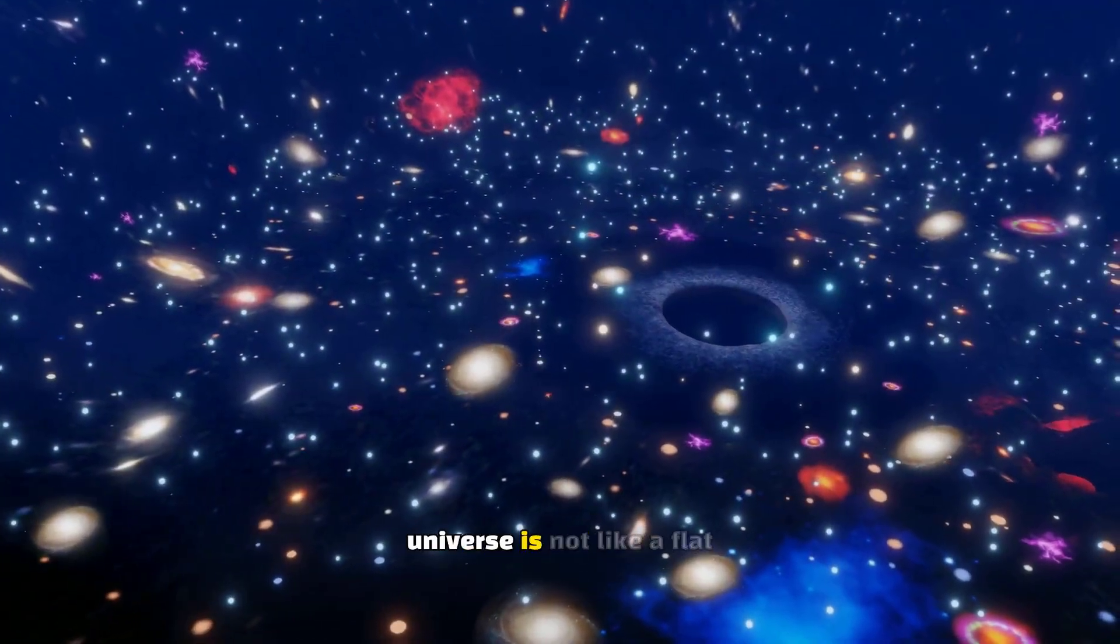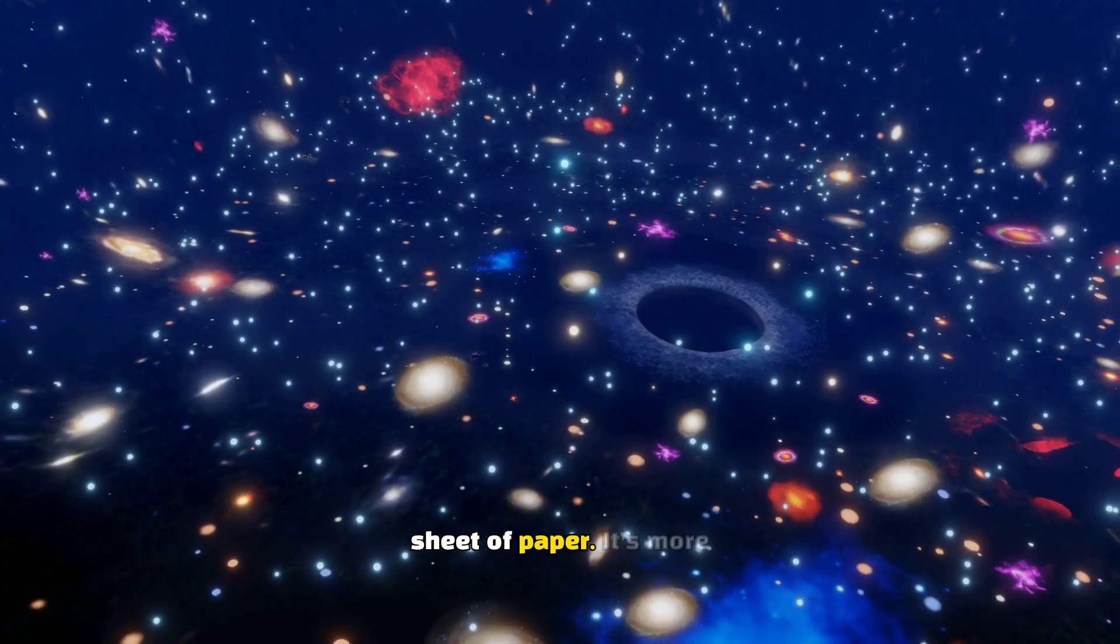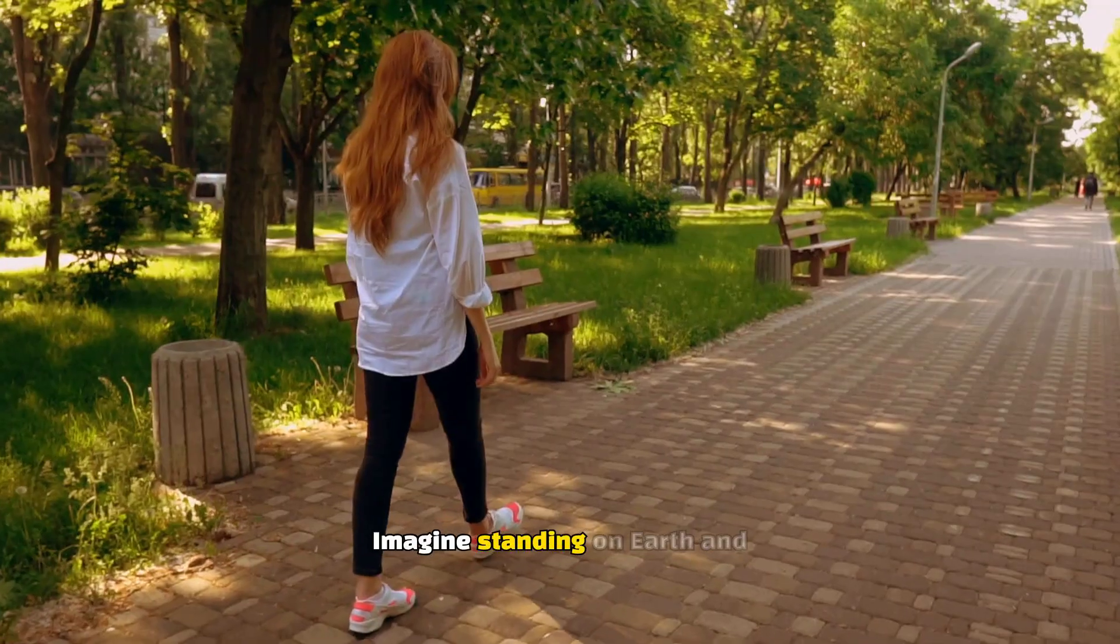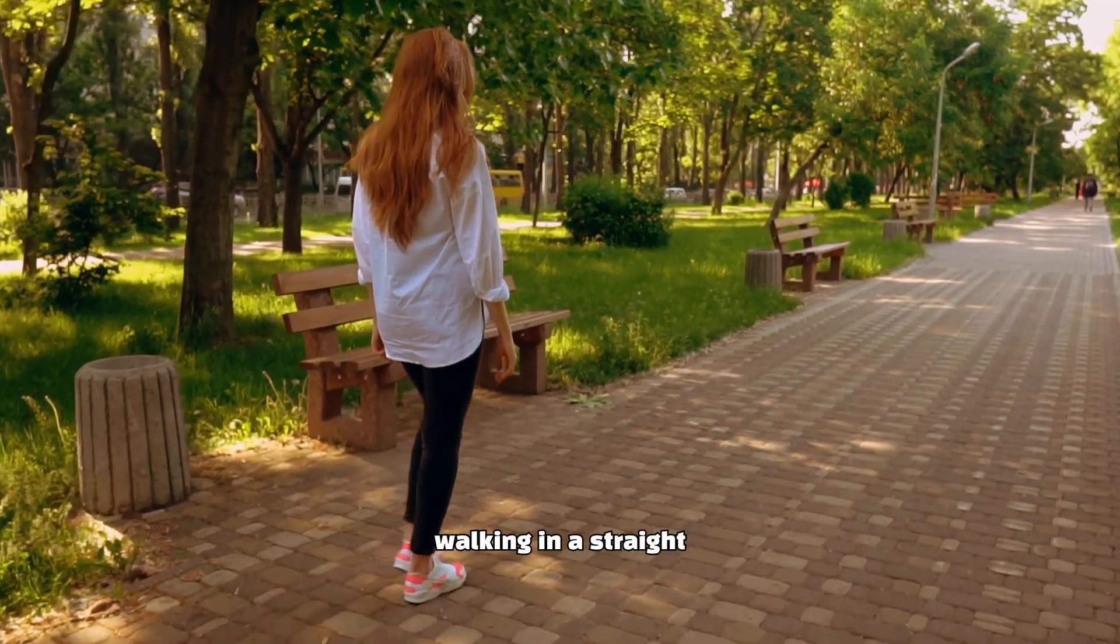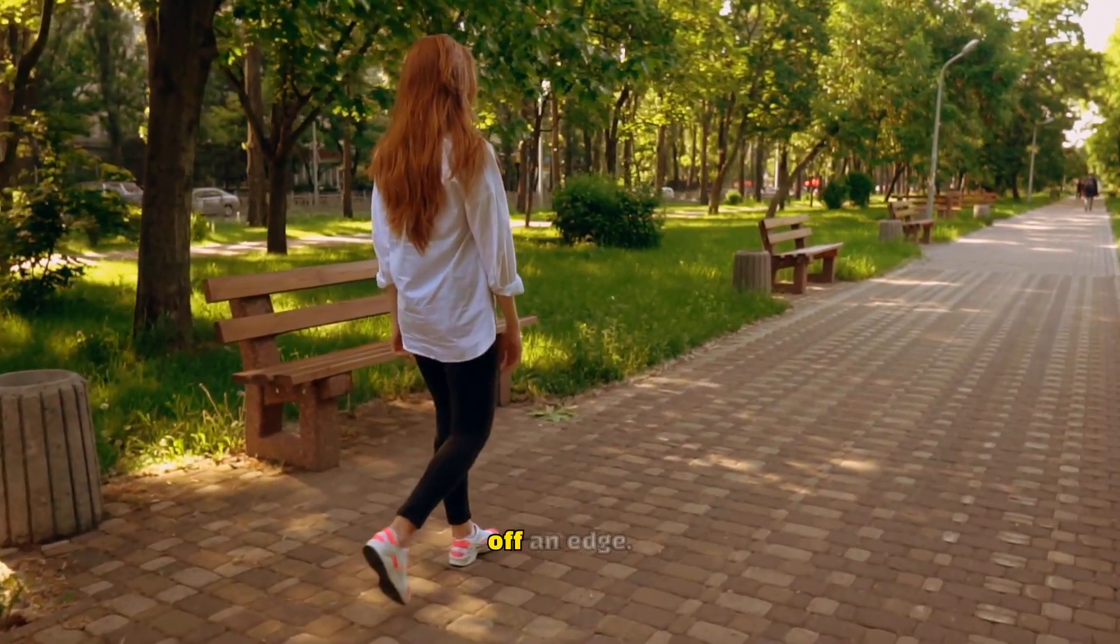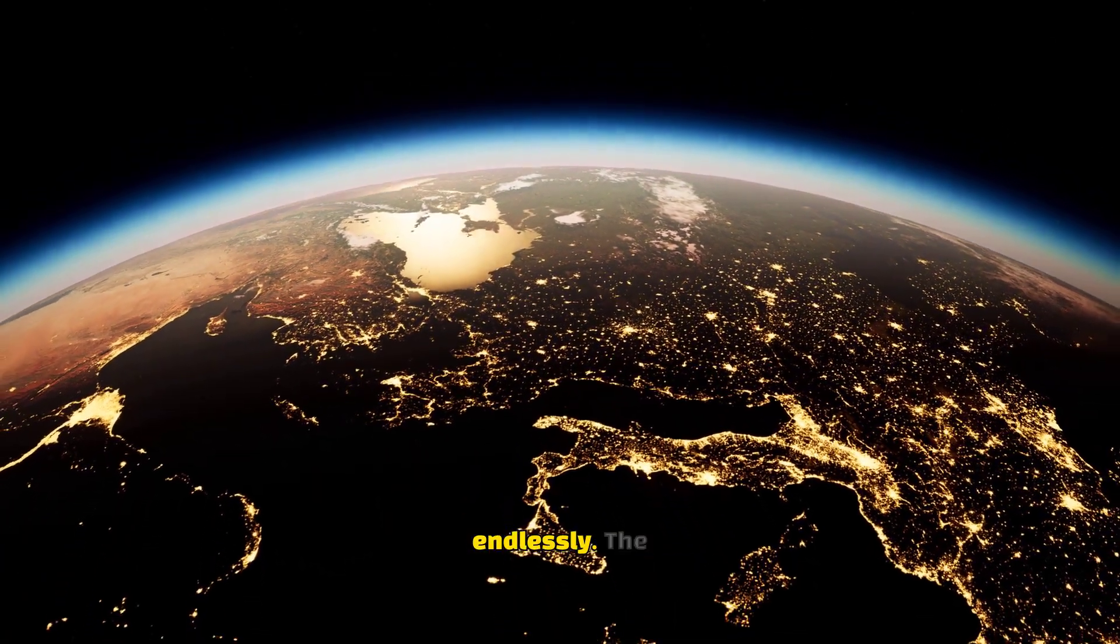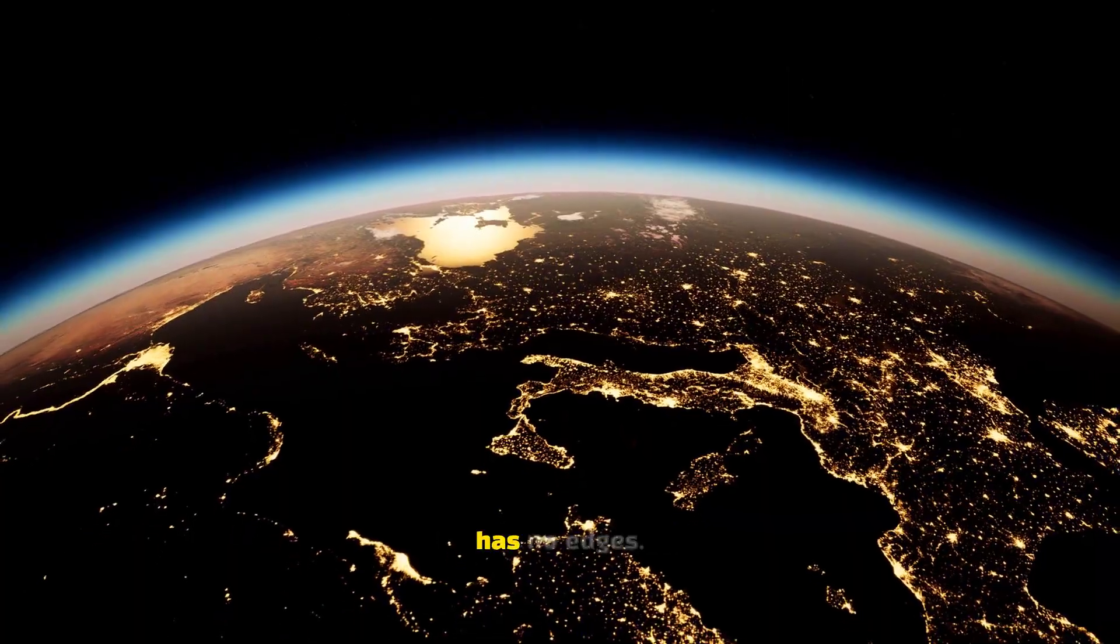Here's why. The universe is not like a flat sheet of paper. It's more like the surface of a sphere. Imagine standing on Earth and walking in a straight line. You'll never fall off an edge. Instead, you'll keep moving endlessly. The Earth is finite, but it has no edges.